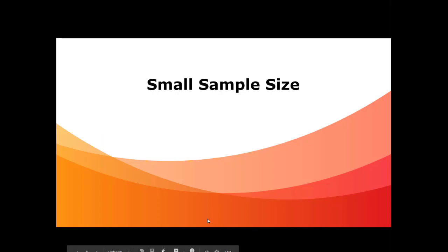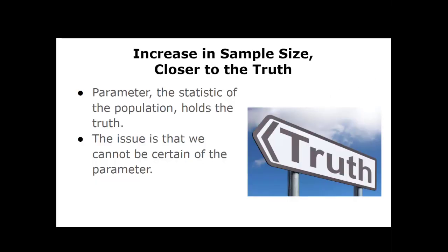The first situation that can introduce error is a small sample size. The big idea is that as your sample size starts to increase, the closer you are to the truth. We're trying to get to the population parameter — that's where the truth is held. The issue is that we can never really be certain of the parameter unless we're able to actually deal with everybody in that population.